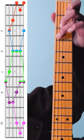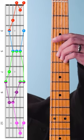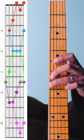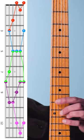Here's the five shapes you need to know to unlock the CAGED system. It starts with a C, then goes to an A shape, then a G shape, then an E shape, then a D shape.